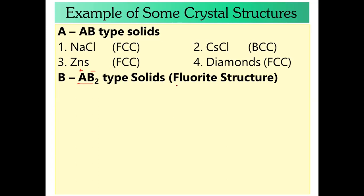Fluoride structure is special. We have three examples to study. The basic example is CaF2. In AB2, A has a plus-2 charge and B has a minus-1 charge. A is the sphere and cation. B is anion and occupies the void. That means this is the fluoride structure.